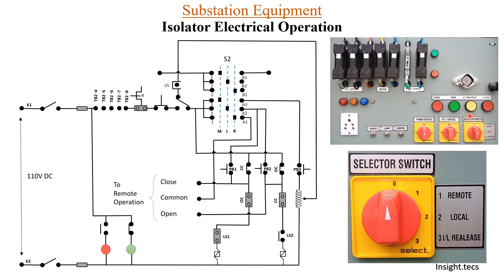In order to press the IL release and insert the key into the switch, you have to select the appropriate position on the selector switch. The selector switch must be at point number 3 — in that case only will you be able to press this push button and apply the key.